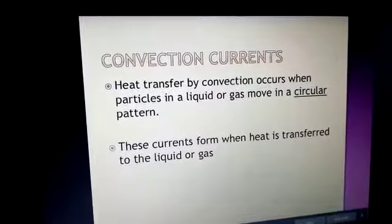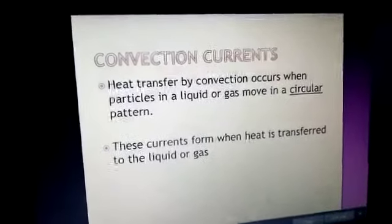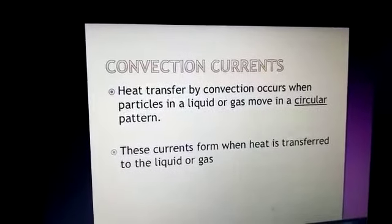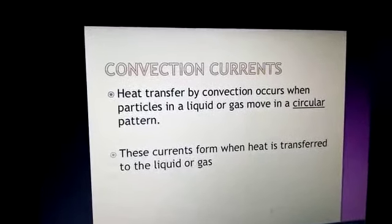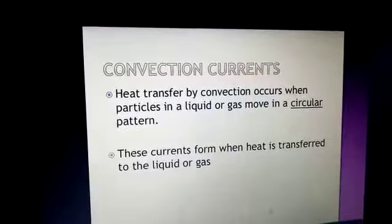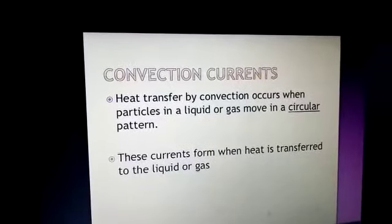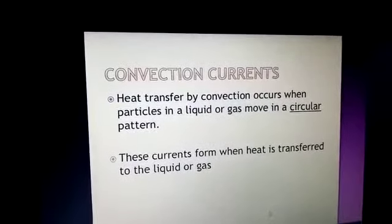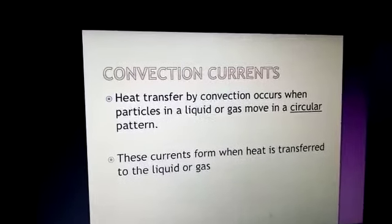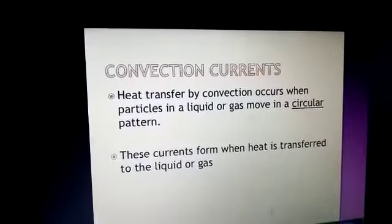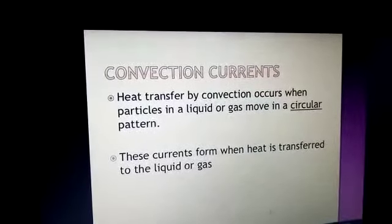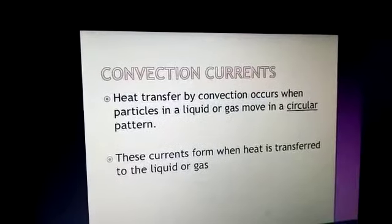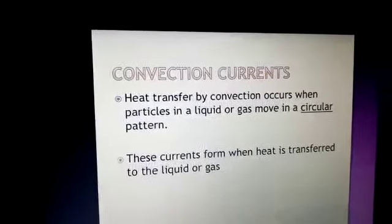These currents form when heat is transferred to the liquid or gas. When particles gain enough heat energy, the gaseous particles start moving upward and become less dense than the colder particles. They move upward, then colder particles move downward. The colder particles also gain heat energy and transfer back upward. In this way the cycle takes place and the phenomenon of convection happens.